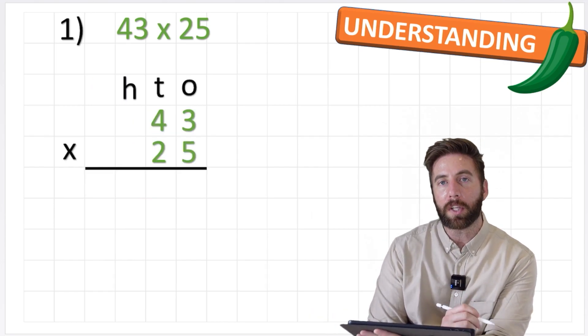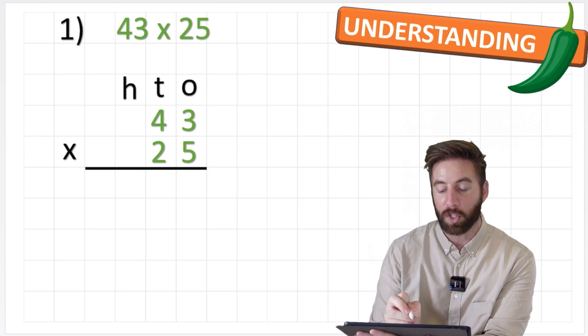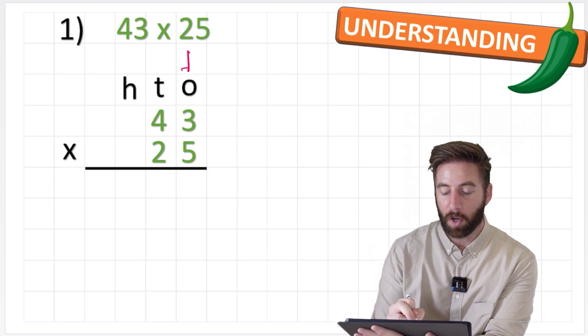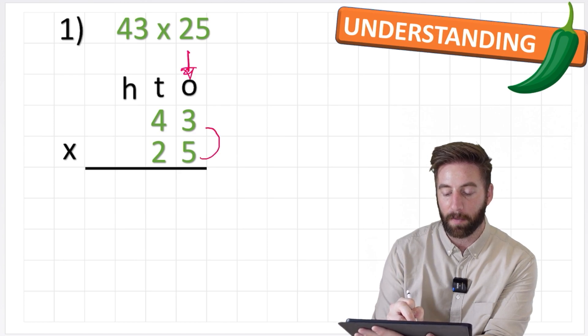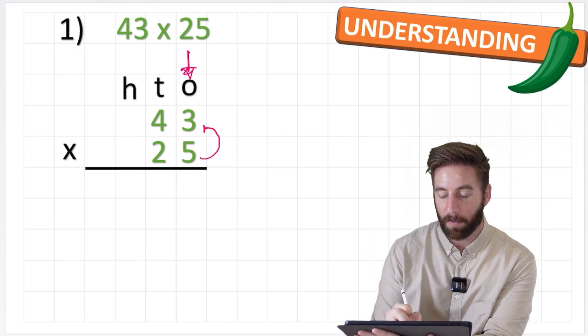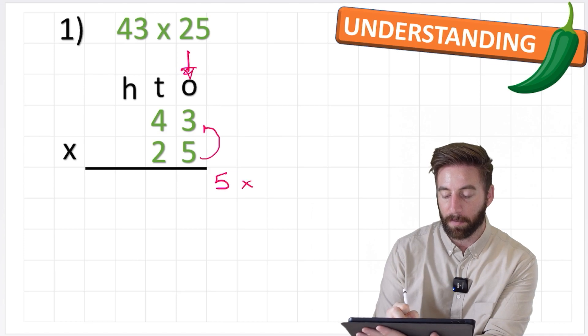Now where do we start? Well we always start with our smallest values and in this question we have a ones column. So ones will be our smallest value. So we're going to multiply our 5 times our 3 to start with. So my first question will be 5 times 3.